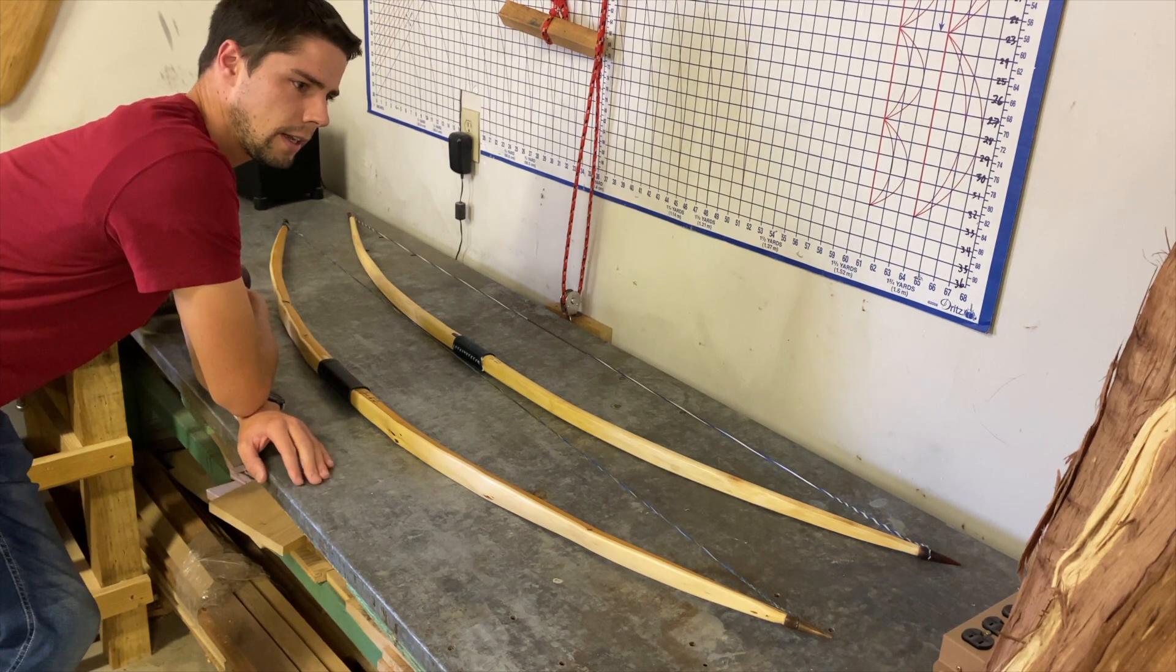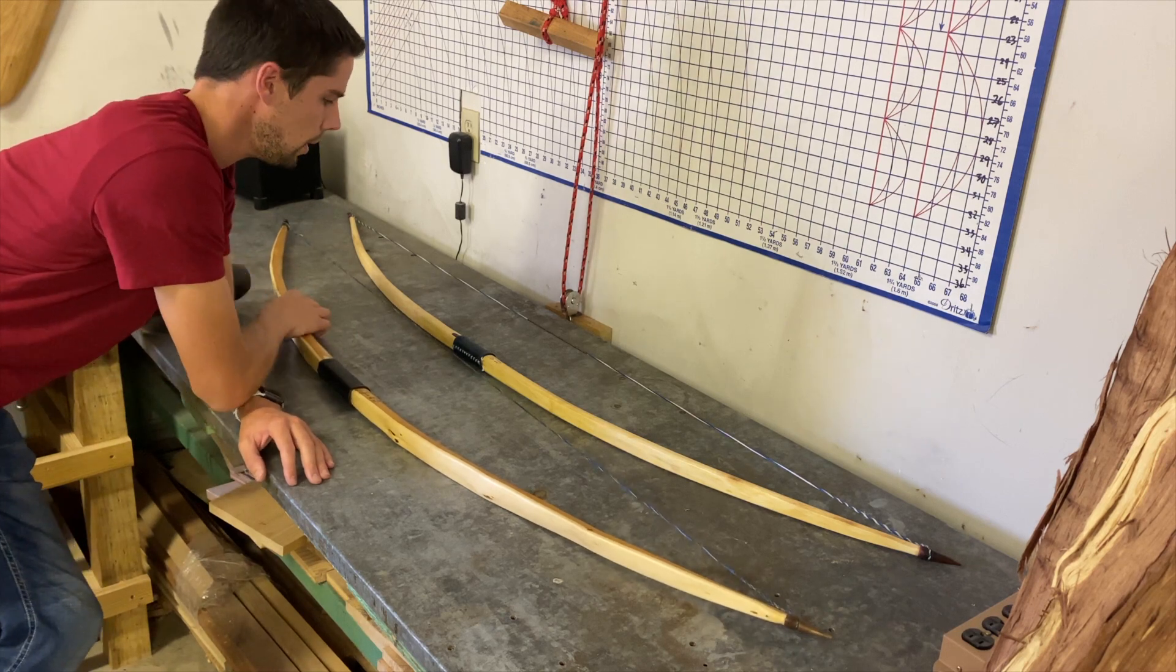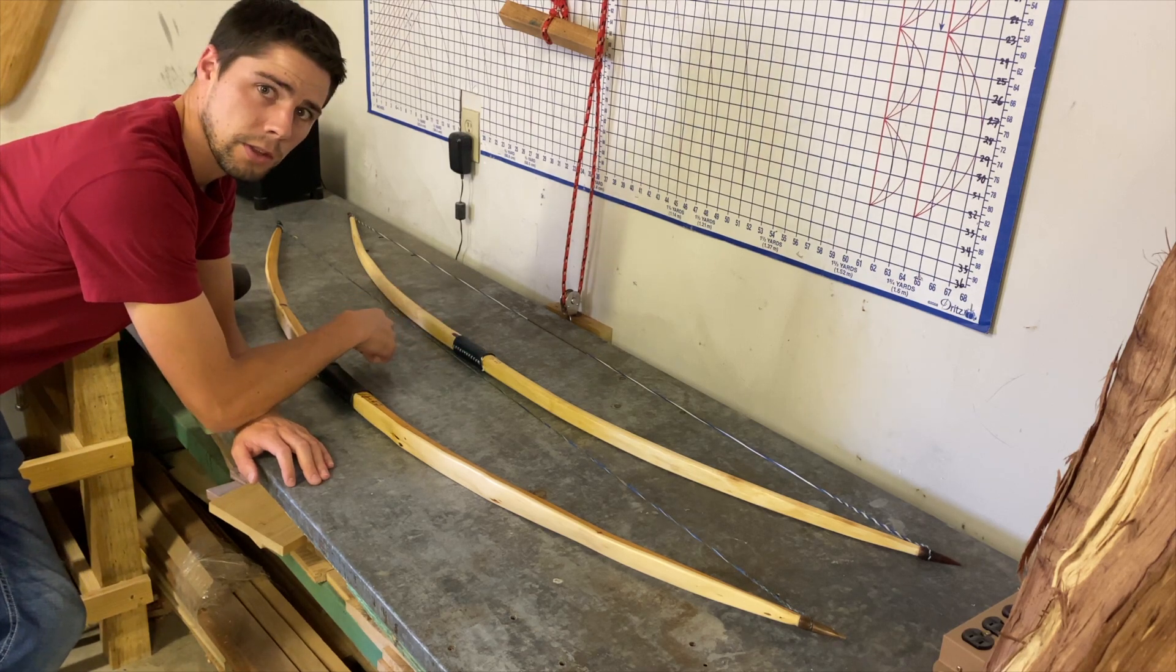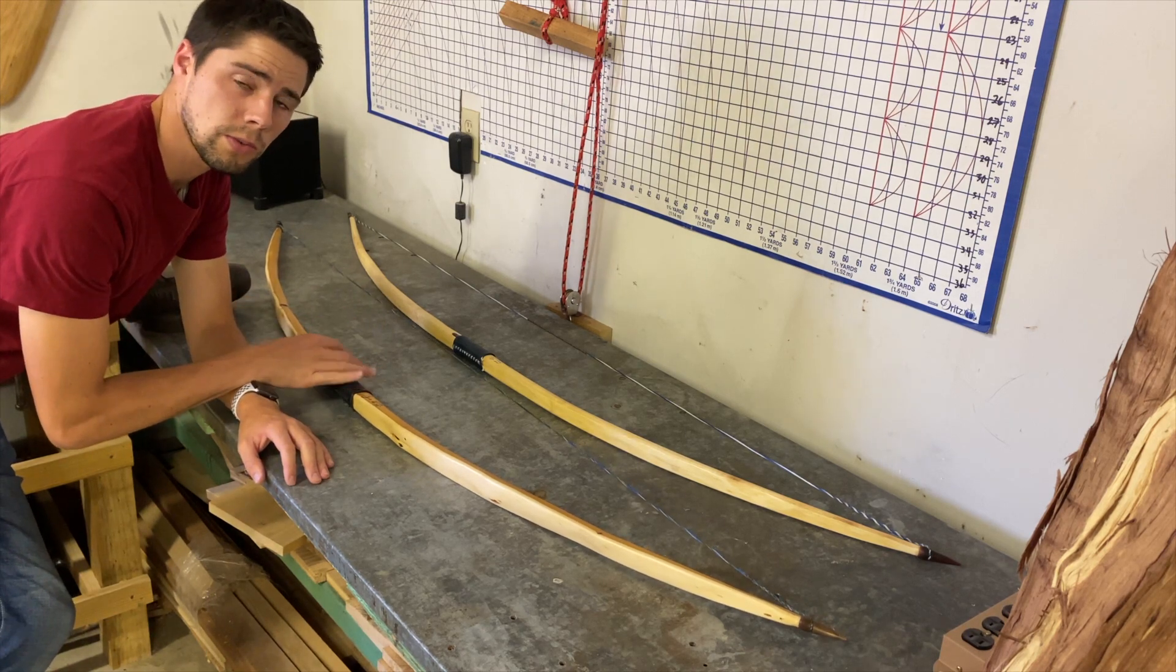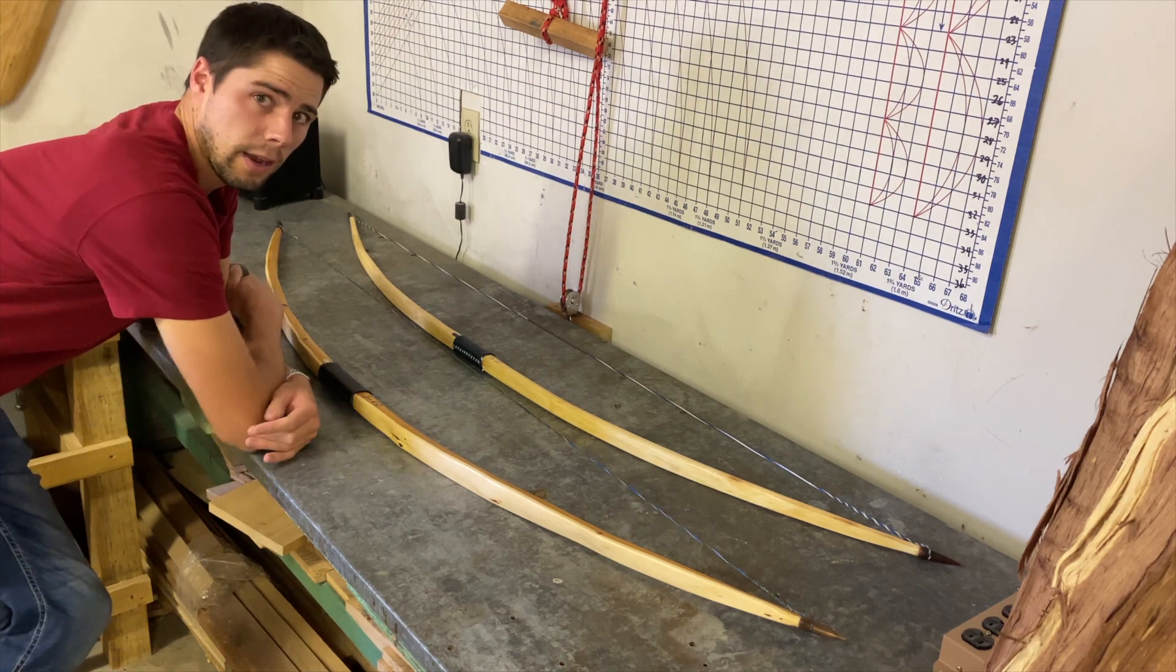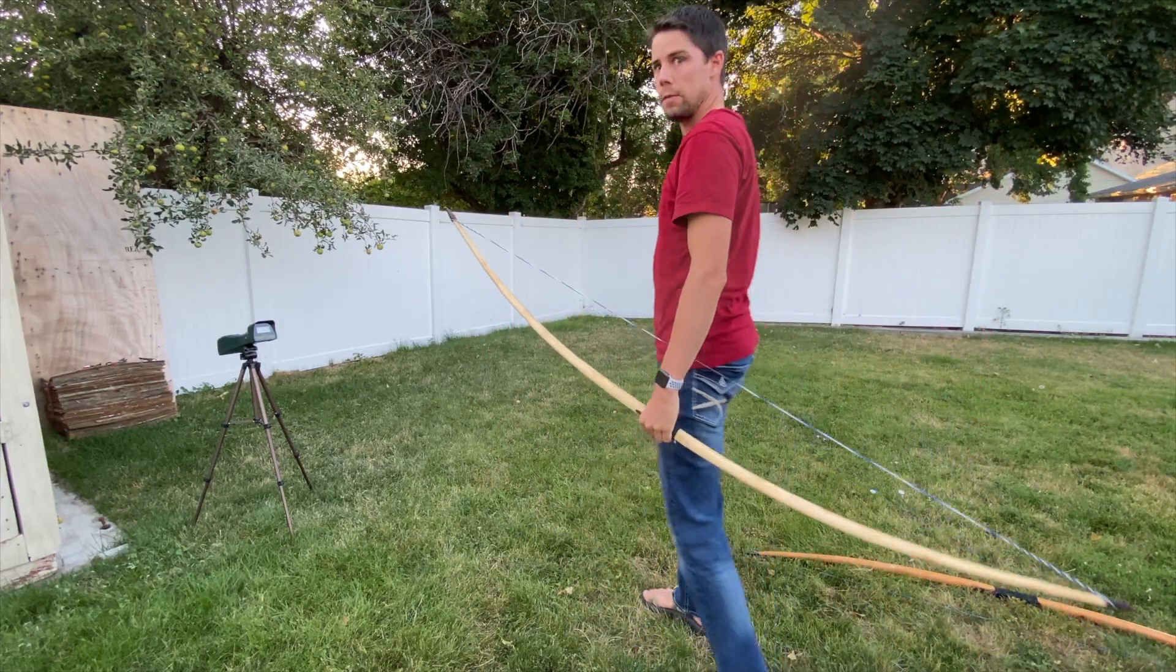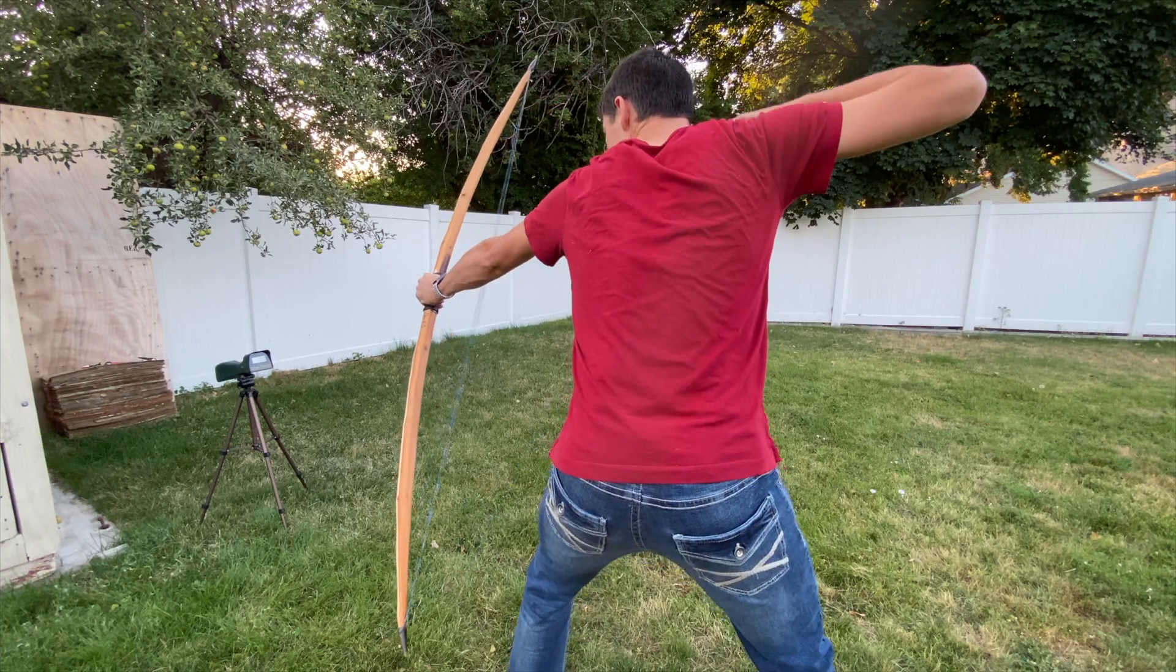They're relatively the same length, 70 inches nock to nock. Well, I think this one's a little longer, like 71. The ash bow here shoots around 50 pounds at 30 inches, and this yew bow here shoots around 60 pounds at 30 inches. And I want to show that this ash bow shoots around 155 feet per second, where this yew bow shoots only 140 to 144 feet per second.